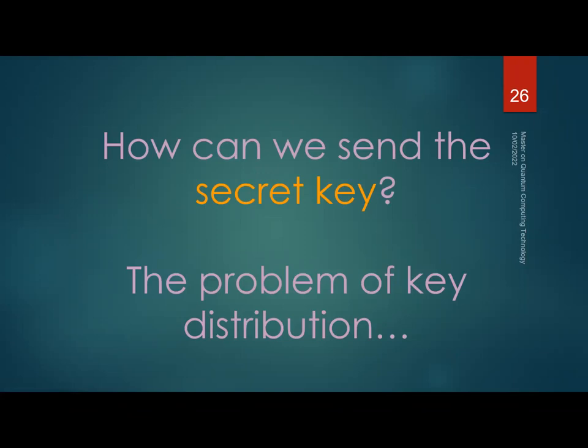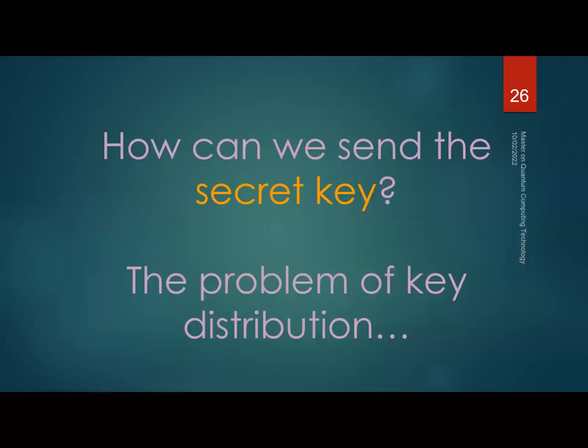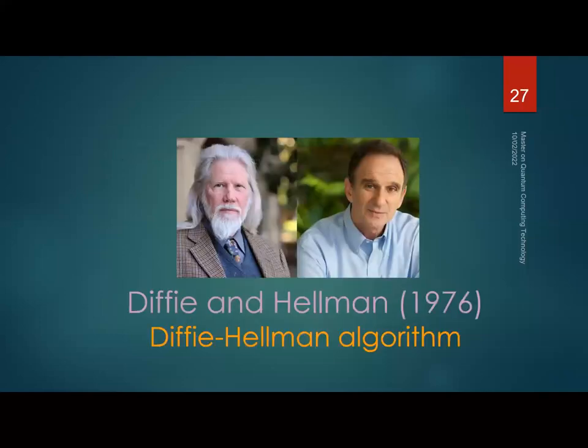The problem is: how do we send the secret key? This is known as the key distribution problem and it was thought throughout almost all of human history that there was no way to solve it. To send a secure message you had to first send a secure key — a kind of catch-22. It wasn't until the 1970s that this began to be solved.